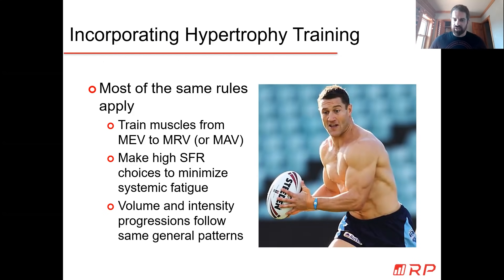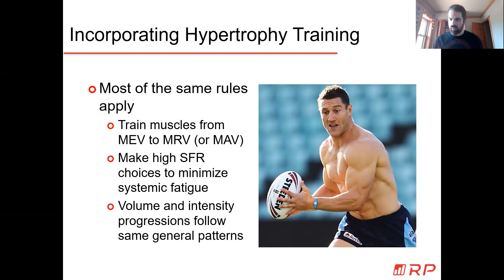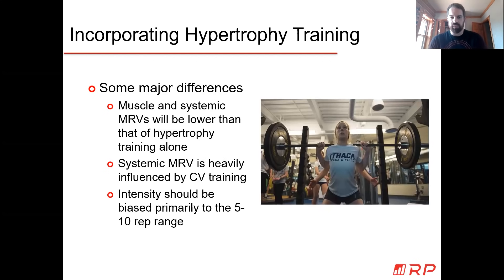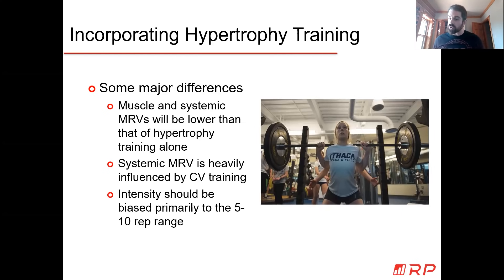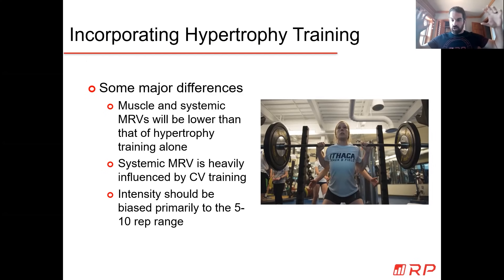Volume and intensity progressions will follow the same general patterns - moving from MEV to either MAV or MRV, increasing weight to stay in your loading zones, and having some progression in relative intensity. However, your local muscle and systemic MRVs will be much lower than if you were just doing hypertrophy training alone. If you're doing sport training and hypertrophy training, take your hypertrophy numbers and squish them down a little bit - how much depends on how much other sport training you're doing. You've added a whole other training element, so you have to account for that.